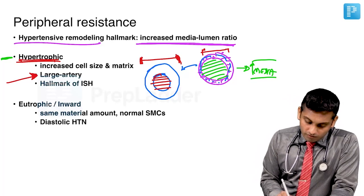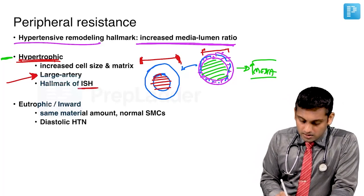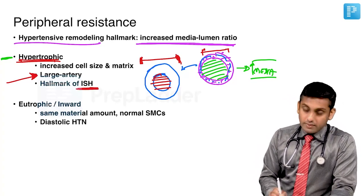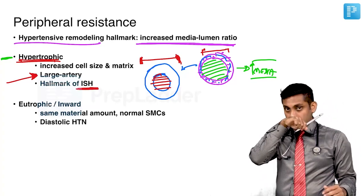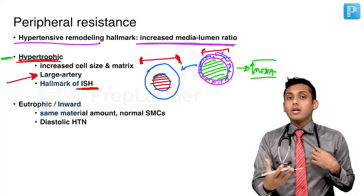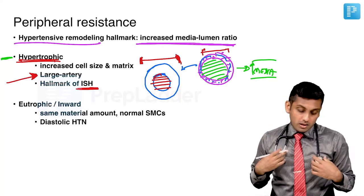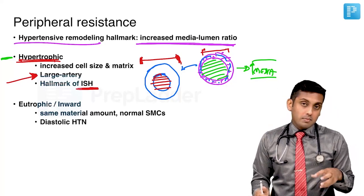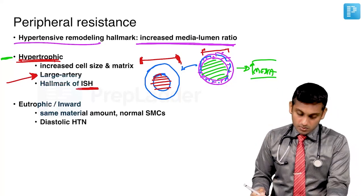This type of hypertrophic remodeling is often seen in large arteries, meaning branches of the aorta and large muscular vessels. It is a hallmark of isolated systolic hypertension. I will summarize this at the end where it will become more clear how important this can be asked as MCQs.